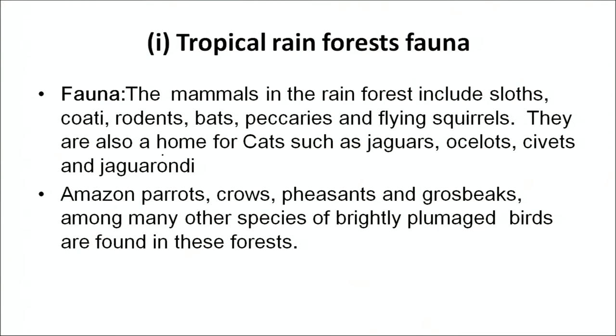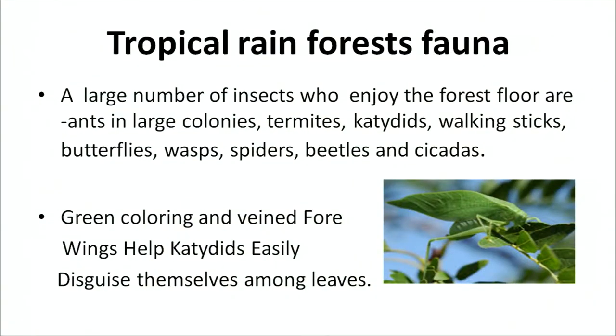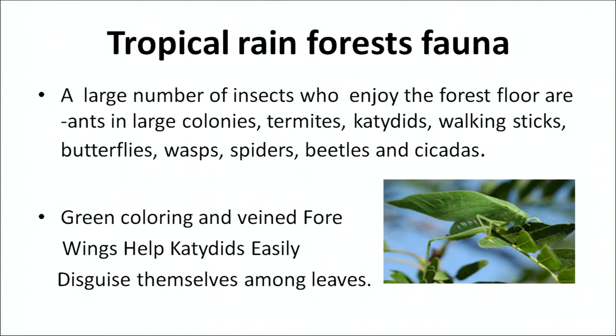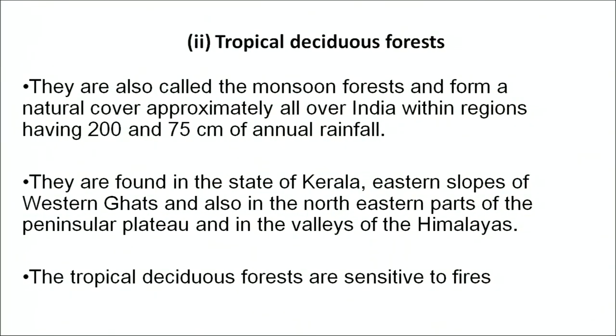Pheasants and grosbeaks are among the many brightly plumaged bird species commonly found in these forests. A large number of insects are found including ants in large colonies, walking sticks, butterflies, wasps, spiders, beetles, and cicadas. Green colouring and veined wings help insects to disguise themselves among the leaves to protect themselves from predators. These forests are also called monsoon forests and form a natural cover all over India in regions having 200 to 75 centimeters of annual rainfall.